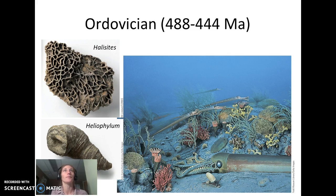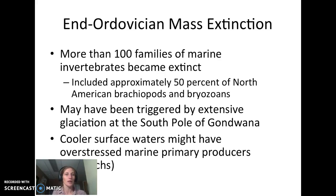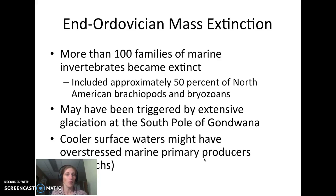At the end of the Ordovician we have a mass extinction event — more than 100 families of marine invertebrates go extinct. About 50% of all North American brachiopods and bryozoans from the Ordovician are no longer present in the Silurian. This may have been triggered by extensive glaciation at the South Pole in Gondwana, which cooled off the surface waters. That stress affected especially the primary producers, the acritarchs — the things everything else was eating — leading to the demise of many species.